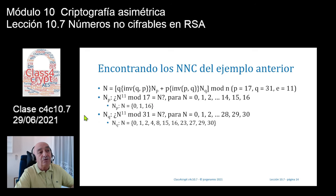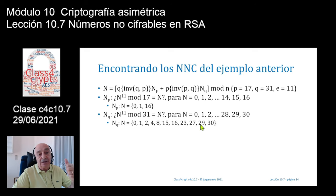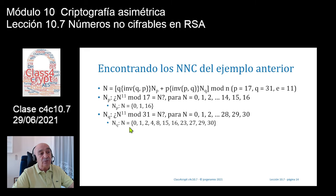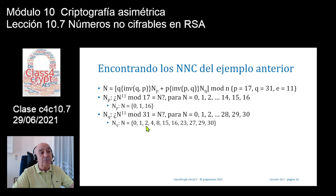La pequeña sorpresa está en el módulo 31, que sería el primo Q. En el primo Q hago la misma pregunta para todos los valores del módulo 31, es decir, para n = 0, 1, 2, 3, 4, ..., 28, 29 y 30. 0 elevado a 11 módulo 31 es igual a 0, lo apunto. 1 elevado a 11 módulo 31 es igual a 1, lo apunto. 2 elevado a 11 módulo 31 es igual a 2, lo apunto. 3 elevado a 11 módulo 31 no es igual a 3, no lo apunto.